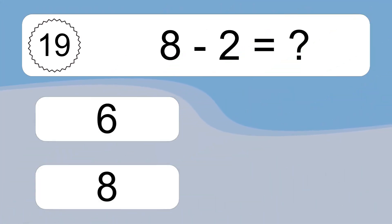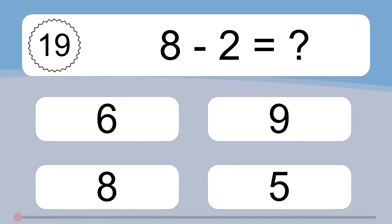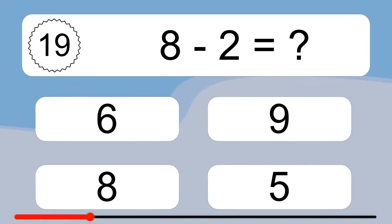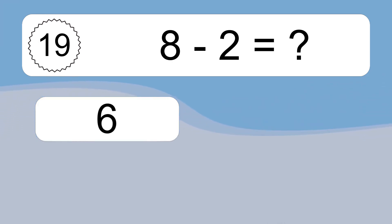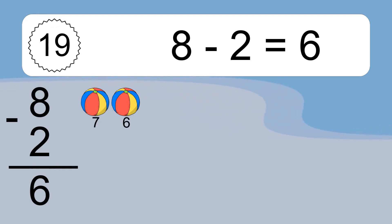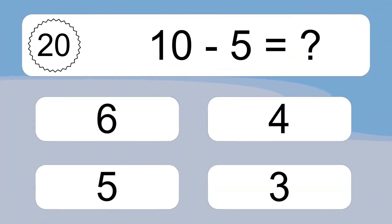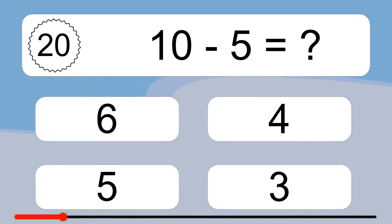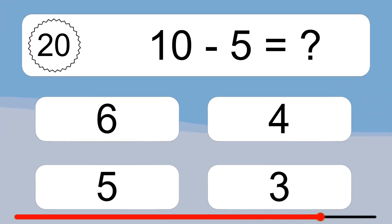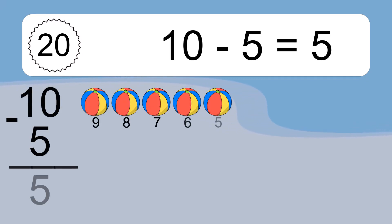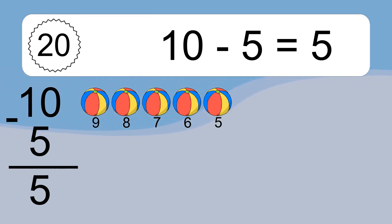8 minus 2 equals what? 8 minus 2 equals 6. Let's count it: 7, 6. 10 minus 5 equals what? 10 minus 5 equals 5. Let's count it: 9, 8, 7, 6, 5.